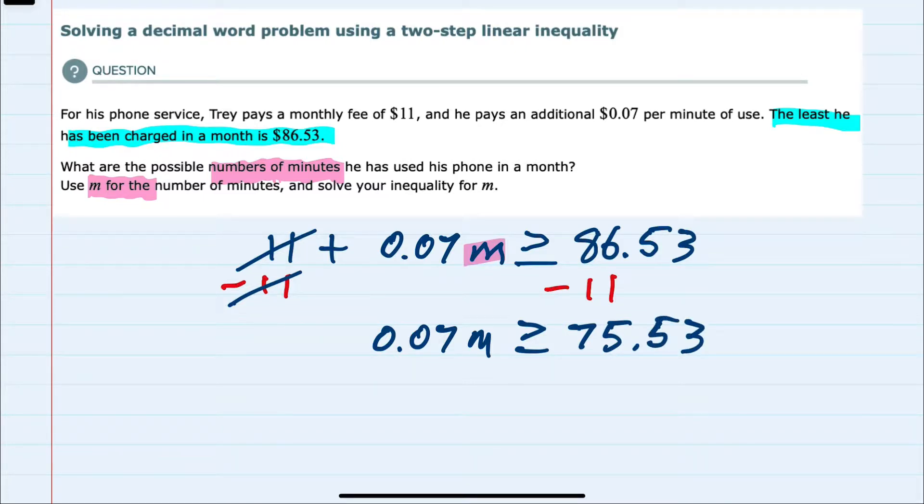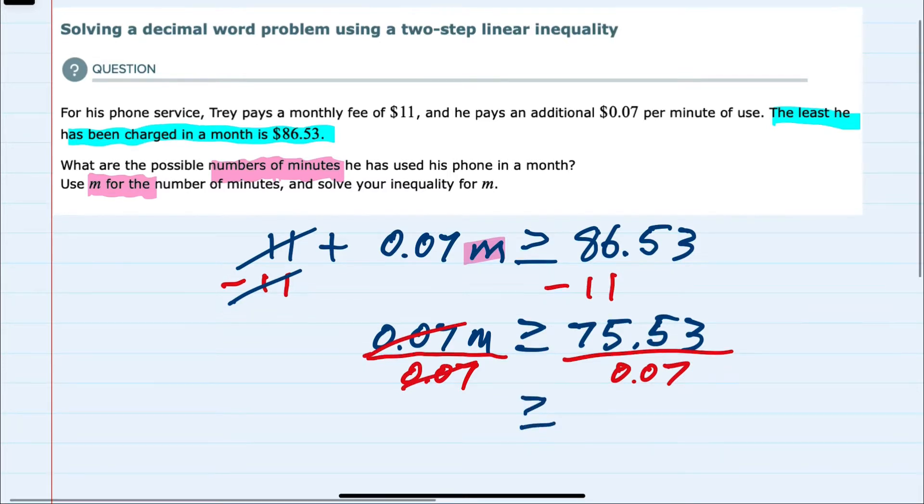Then lastly, to solve for M, I would undo multiplication with division by 0.07, again on both sides. Since I'm dividing by a positive number, I again keep the sign the same. We have isolated M on the left-hand side.